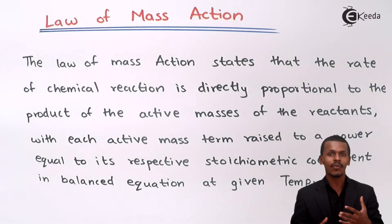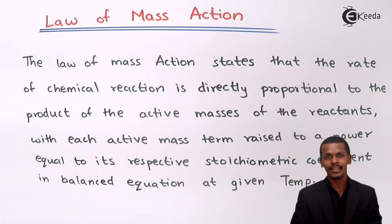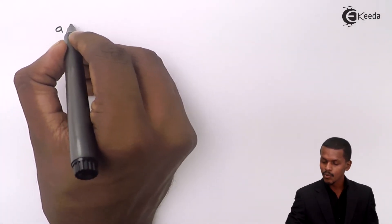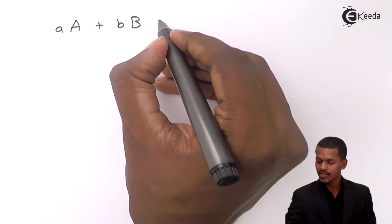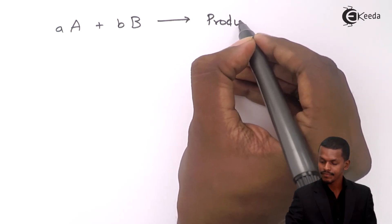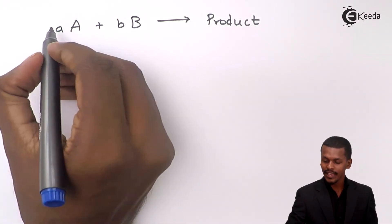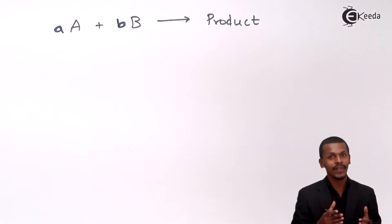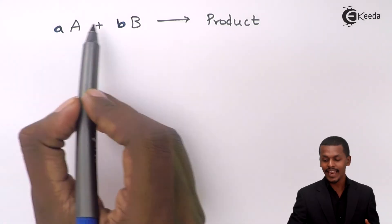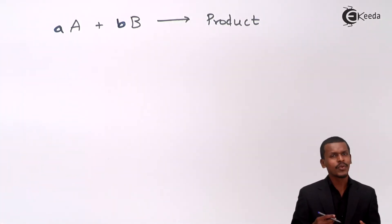Let me give an example so that we could understand what the Law of Mass Action actually is. Suppose we have a general reaction represented as: 'a' moles of A reacting with 'b' moles of B, so as to give a particular product. Here, the small 'a' and 'b' represent the stoichiometric coefficients of A and B respectively, or we could also call them the number of moles of A and number of moles of B.